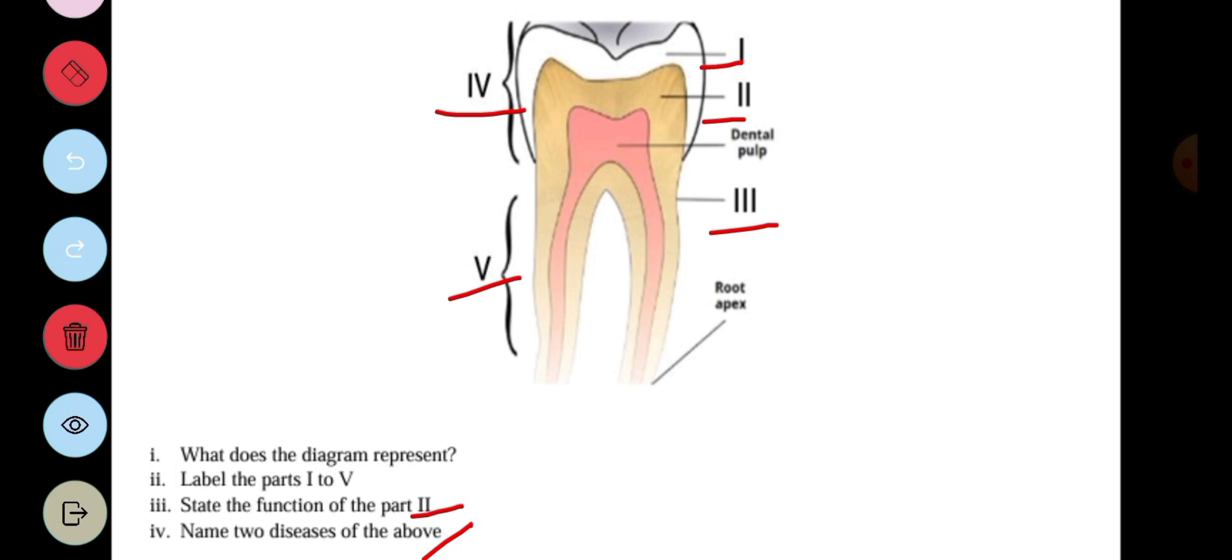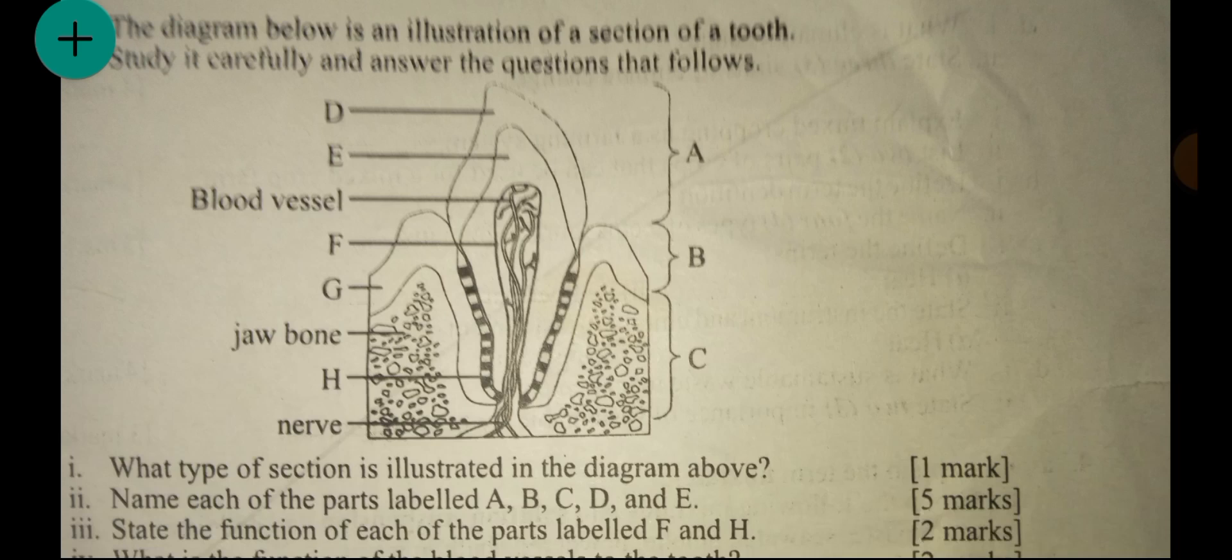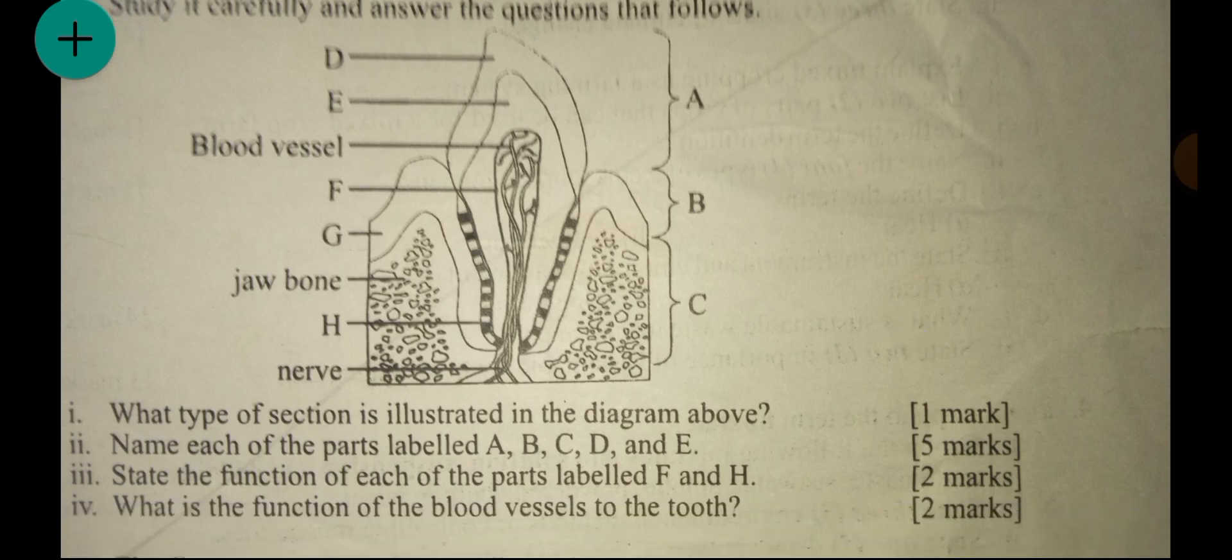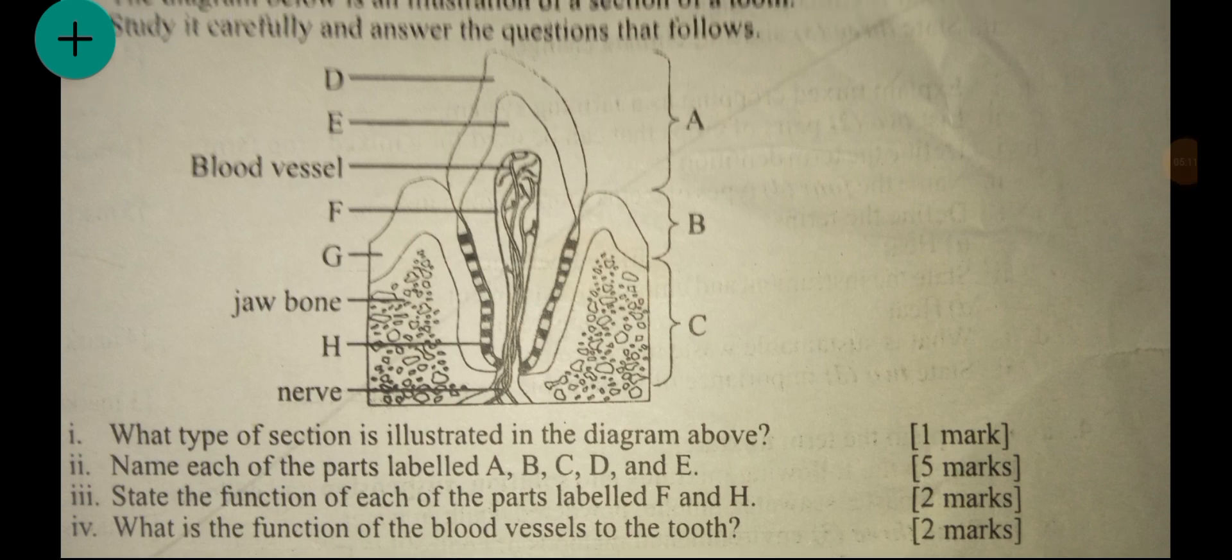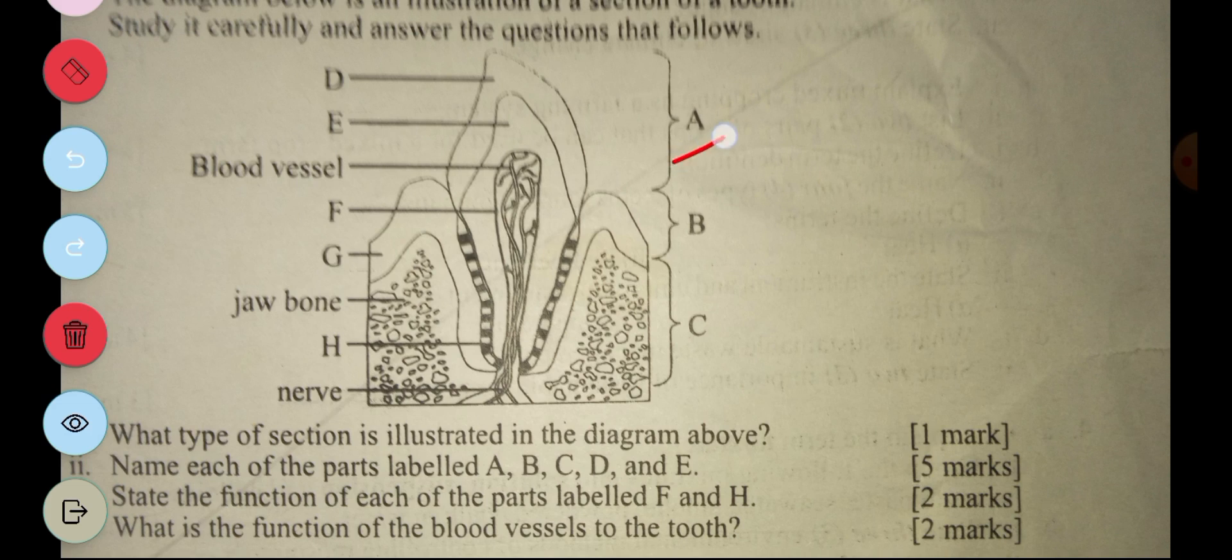So the diagram below is an illustration of the section of the tooth, study it carefully and answer the questions that follow. So the first question says what type of section is illustrated in the diagram above, so this is a cross section of the tooth, so that's the answer for the I. And the II says name each of the part labeled A, B, C, D, E. So A is crown, B is neck, C is roots, now D is enamel, E is dentine.